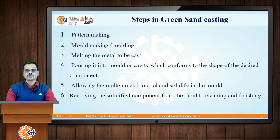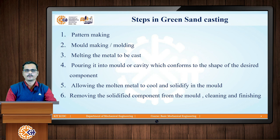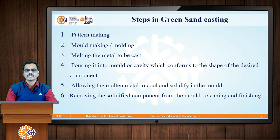Step number one is known as pattern making. A pattern is a replica or duplicate of the casting which is to be produced. The most common materials for patterns are metallic, wooden, thermocol, rubber, plastic, or resin patterns. The dimensions of patterns are always slightly more than the dimensions of the casting to be produced, because in casting we get components with the help of liquid-to-solid conversion, and that is why we have to provide a shrinkage allowance.